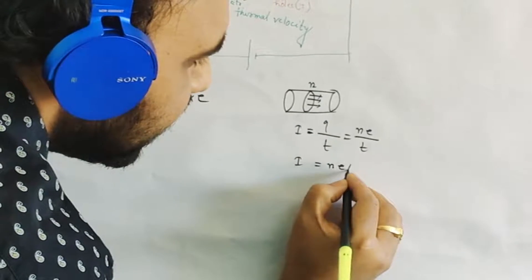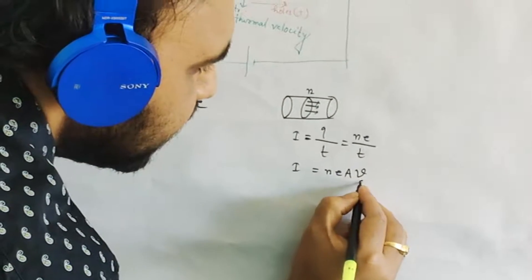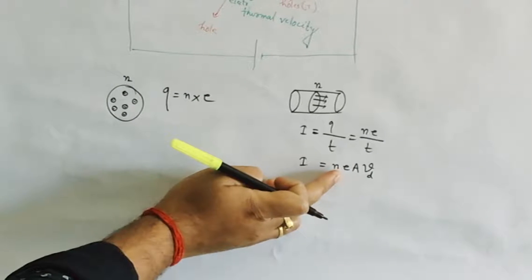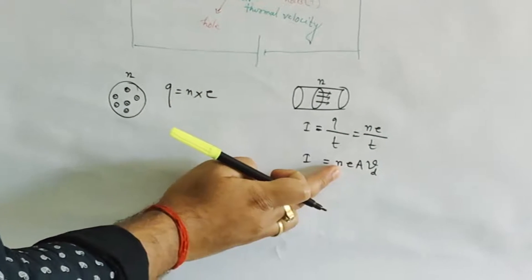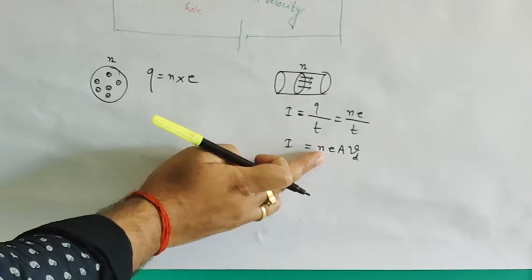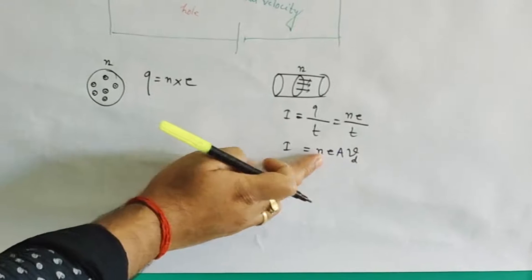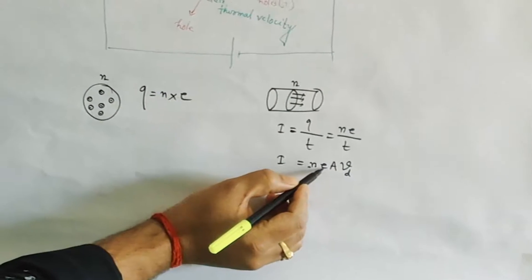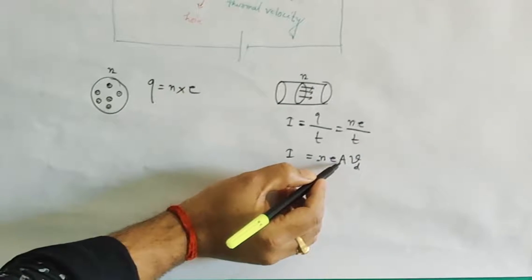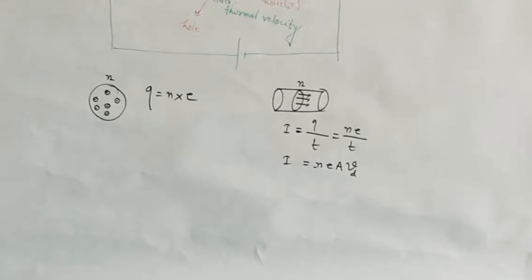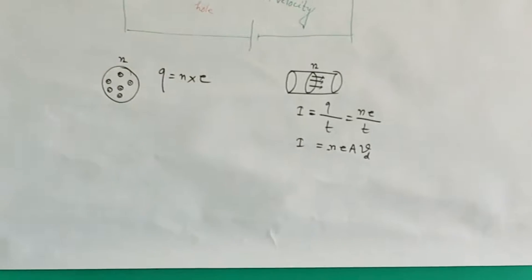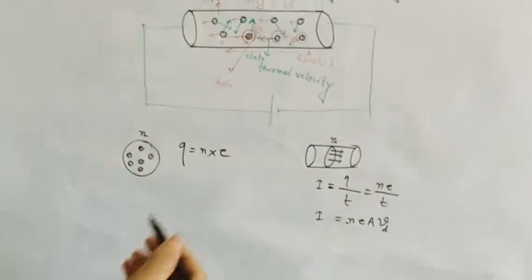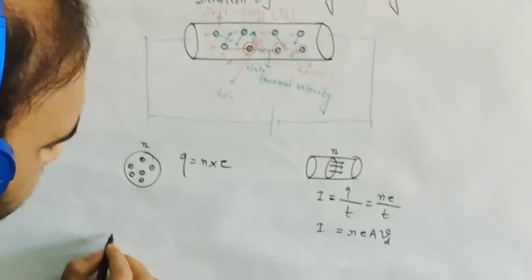What is this n? n equals the number of electrons per unit volume. e is electronic charge, A is area of cross-section, and vd is drift velocity. Now let's come to the unit of electric current.